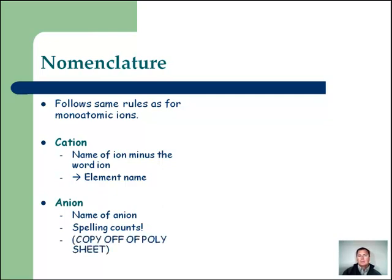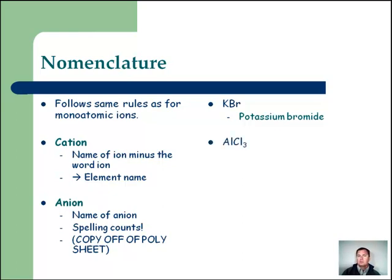Let's look at some examples. KBr — I see two elements, so there's no way this can be a polyatomic compound; it's a binary. So we use our rules from last time: potassium bromide. Aluminum plus chlorine gives aluminum chloride — simple. Now one with a poly: Mg(NO3)2. NO3 is nitrate, and Mg must have a plus two charge because of the subscript. So this is magnesium nitrate.